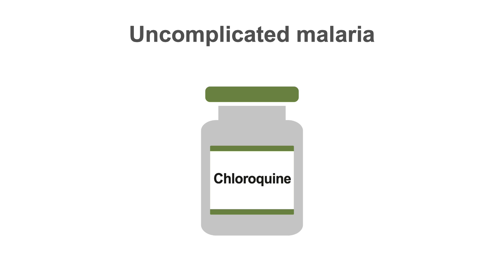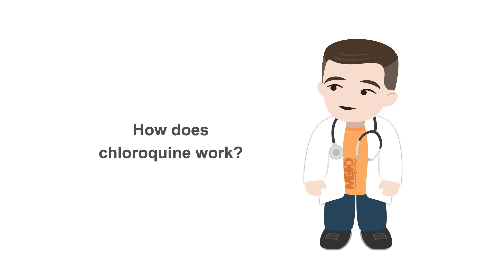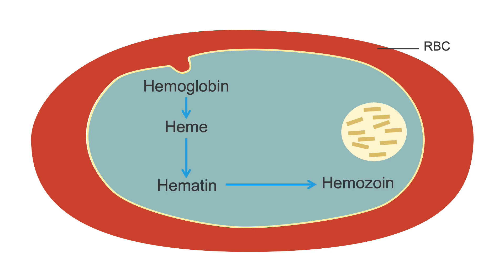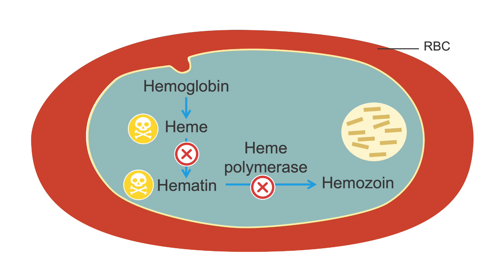The treatment of uncomplicated malaria, generally caused by Plasmodium vivax, Plasmodium ovale, or Plasmodium malariae, usually involves the drug chloroquine. The parasite takes in hemoglobin by pinocytosis and breaks it down into amino acids. The parasite has heme polymerase, which detoxifies heme and hematin to turn it into hemozoin. Heme polymerase is the target of a family of drugs known as 8-aminoquinolines, the most common of which is chloroquine. These drugs work by blocking the parasite's heme polymerase, which makes heme and hematin toxic to the parasite, leading to its death.